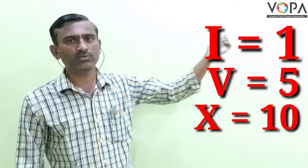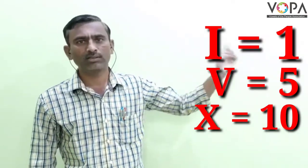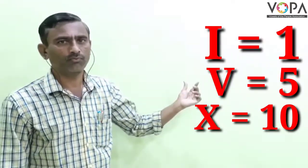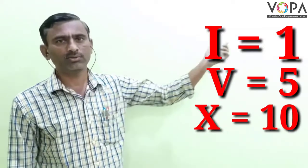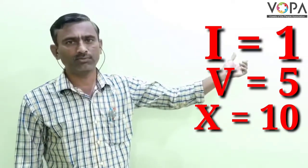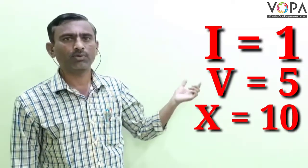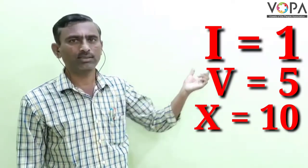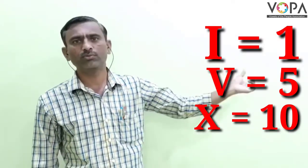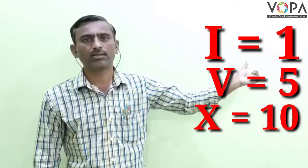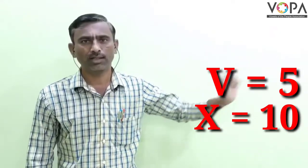Symbol I is used to write 1. Symbol V is used to write 5. And symbol X is used to write the number 10.